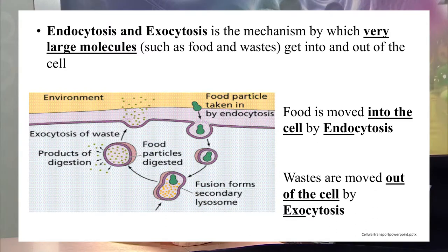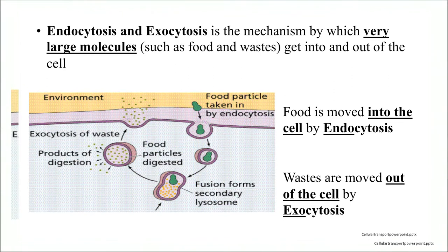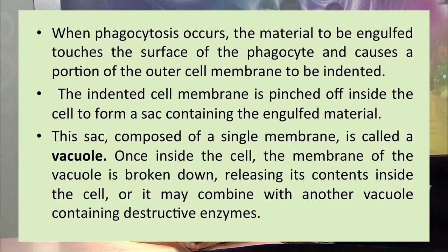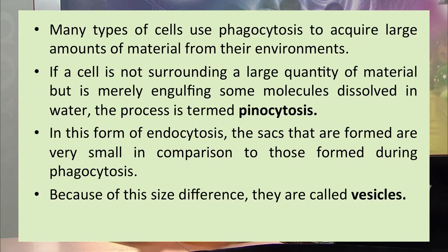In the diagram you can see the cell membrane pinching off to make a vacuole, and then digestive enzymes from the lysosome digest the material, with the waste product going out of the cell by exocytosis. During phagocytosis, the material to be engulfed causes a portion of the outer cell membrane to be indented, and the indented cell membrane is pinched off inside the cell to form a sac containing the engulfed material — called a vacuole. In pinocytosis, because it involves liquid material, the sac is much smaller and is called a vesicle.